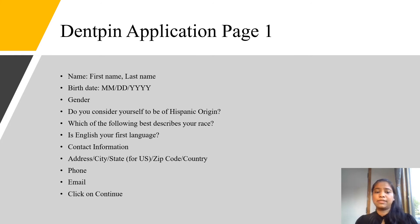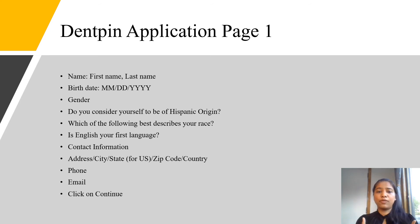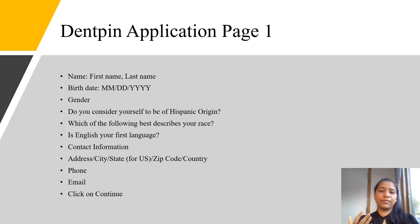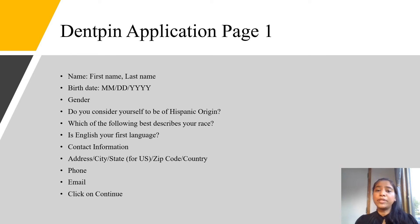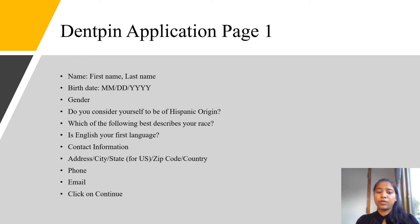Then you fill in your contact information: address, city, state, zip code, and country. If you are a foreign national applying for DENTPIN from your home country, note that the state dropdown only lists the 50 states of the United States, so it may not be valid for you. This address may be used for correspondence. Then provide your phone number and email address, and click to continue — this completes the first page of the DENTPIN application.